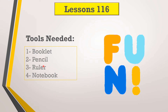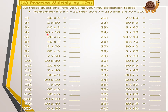Before we start our lesson, please bring your booklet, pencil, ruler, and your notebook or copybook. Let's practice multiplying by tens. Multiplying by tens means multiplying by 10, 20, 30, 40, 50, 60, 70, 80, or 90. For example, 30 multiplied by 4 — I multiply only the non-zero digits: 4 by 3 equals 12, then drop down the zero. So the answer is 120.